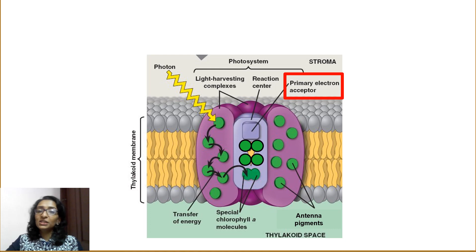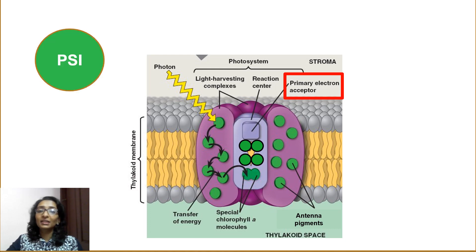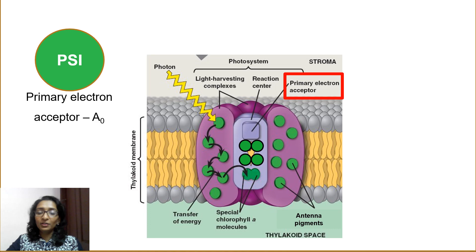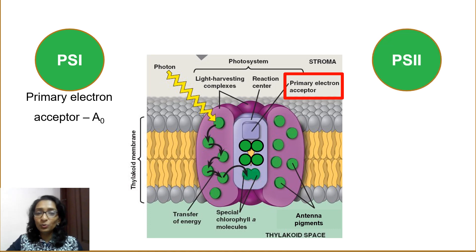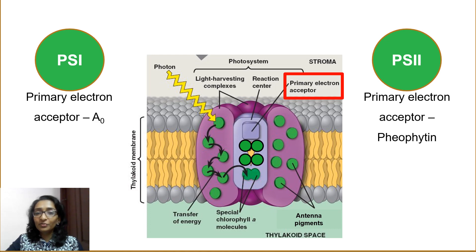As mentioned earlier, in addition to P700, the reaction center of PS1 consists of a primary electron acceptor, A0, which is a modified chlorophyll molecule, while the primary electron acceptor in the reaction center of PS2 is a pheophytin molecule, which is a chlorophyll A molecule without the central magnesium ion.